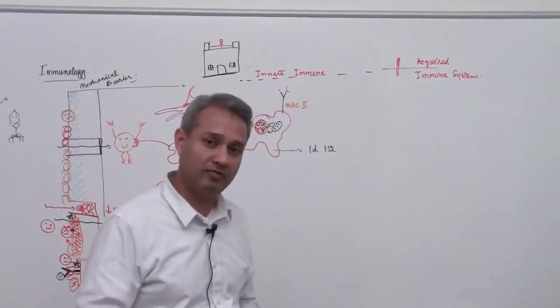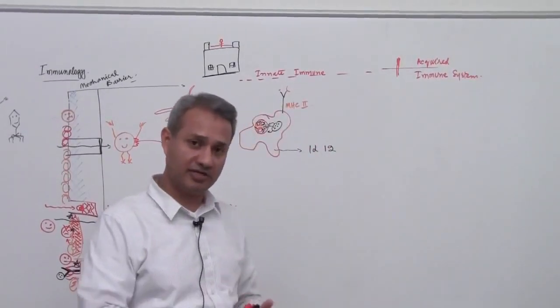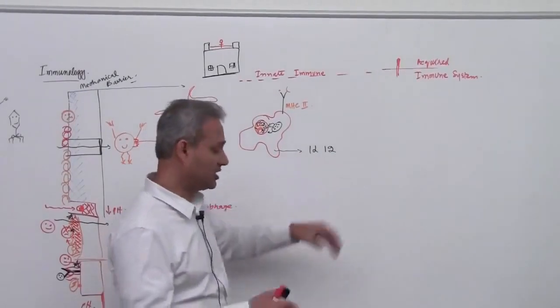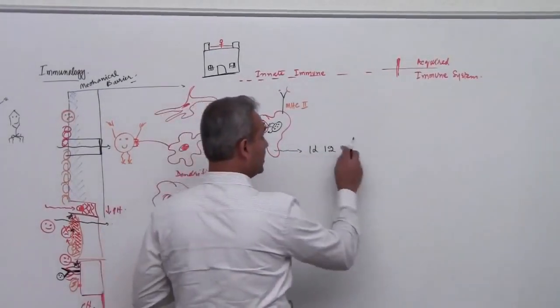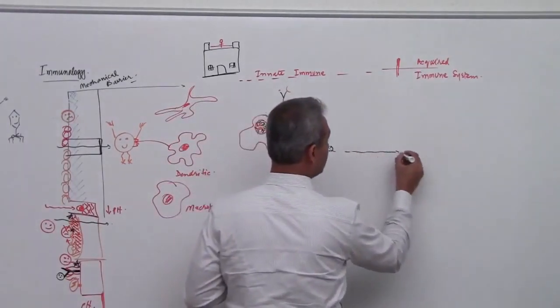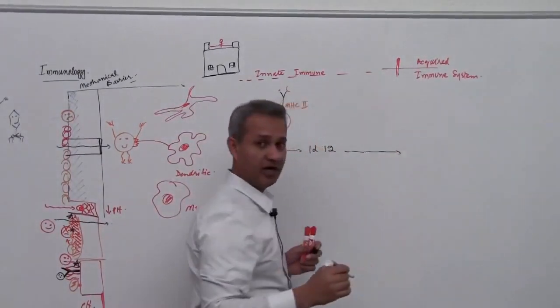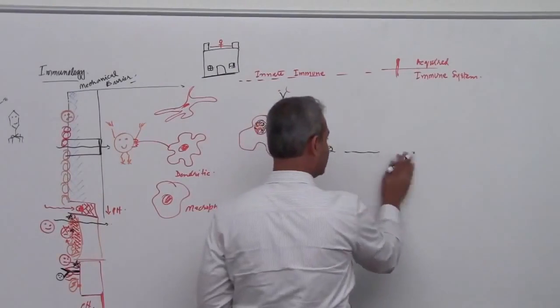So we will talk more about it, we will talk about macrophage, we will talk about dendritic cells, we will see how this would become an arm. At this time, important thing to note is the IL-12 will go here to the acquired arm.